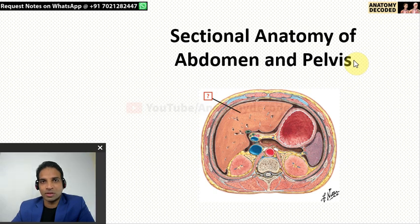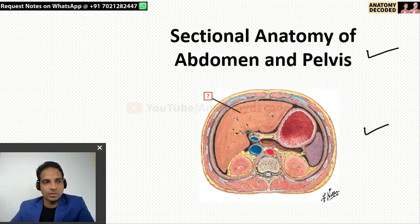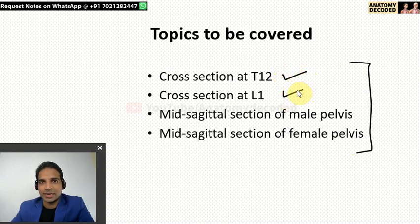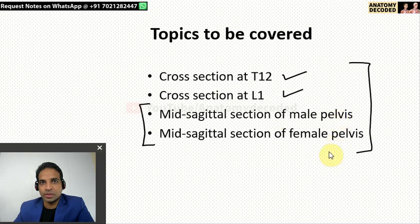Hello everyone, welcome to this session on sectional anatomy of abdomen and pelvis. In this particular session, the topics we will be covering are: a cross section at T12 vertebrae, cross section at L1 vertebrae, and mid-sagittal section of male pelvis and female pelvis. As far as exam point of view is concerned, these two sections are very important because in practical exams, there are specific specimens for the mid-sagittal section of male pelvis and female pelvis.